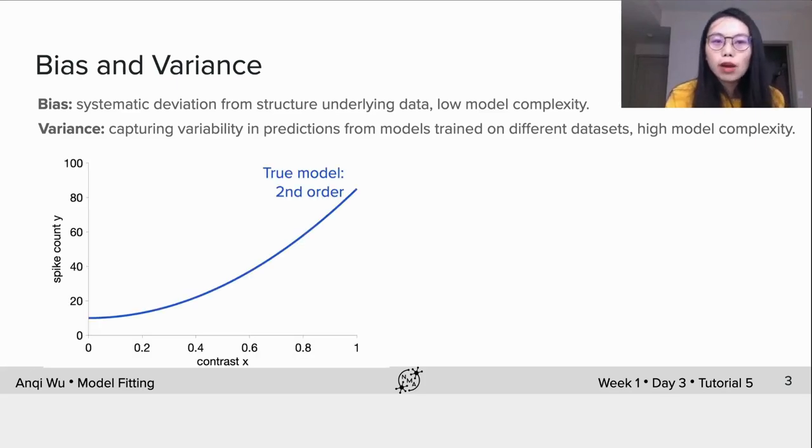Here we have a true model which is the second order polynomial. We generate some data from this true model but fit it with a linear regression model. We can see the line misses some data points. We regenerate some new data from the true model and fit it again with a linear regression and get another line. This new line is a bit different from the previous line.